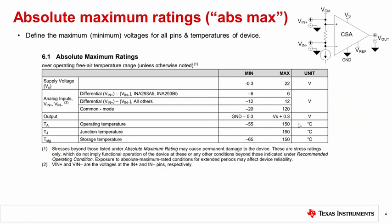The absolute maximum rating section, or ABS-MAX, are the limits beyond which permanent damage may occur. For Current Sense amplifiers, the most critical rating is usually the input common mode voltage rating for the input pins. The voltage at the input pins cannot go beyond the rating specified, even for very short events, or else the device can be permanently damaged.